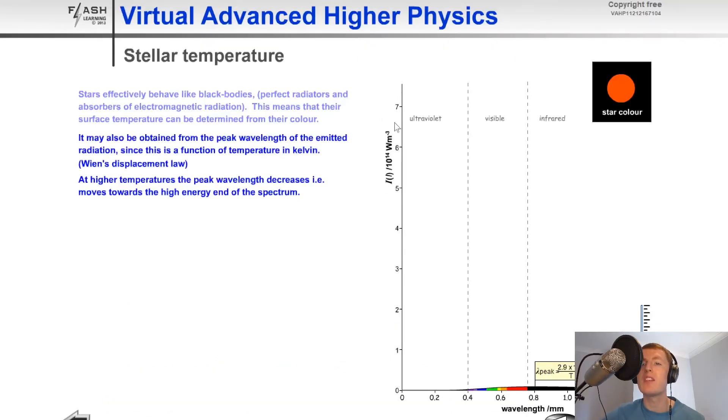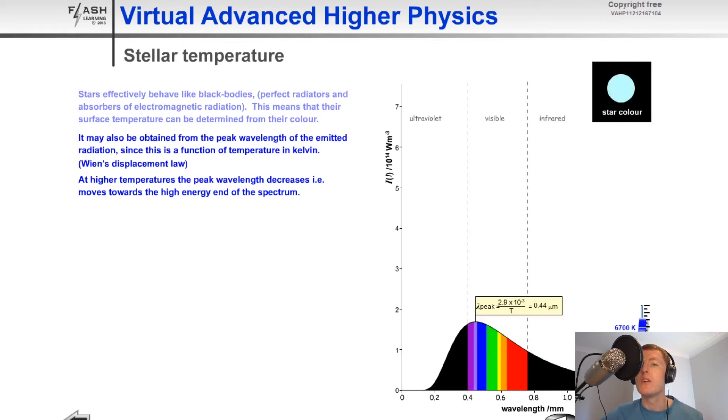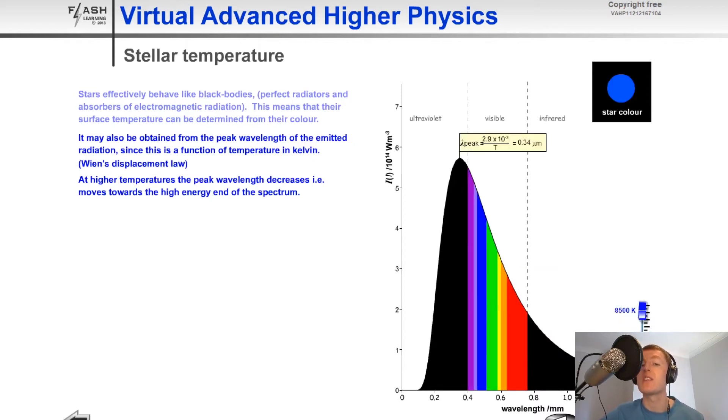Here we have our intensity of the radiation against wavelength. Right now we're at a temperature of 3,700 Kelvin so our star is pretty cool and it's going to look red. If we then increase the temperature, you'll notice that we go through orange to yellow to blue. The first thing to notice is that when we start off low and go to higher and higher temperature, the area under the curve gets larger and that means that more radiation is being emitted by the star per unit area.